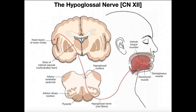When we think about the hypoglossal nerve, we have to consider that it has an upper motor neuron and a lower motor neuron component. The upper motor neuron comes from the precentral gyrus in the cerebral cortex, and we can follow its axon going down as part of the corticobulbar tracts. As it descends, it crosses over to the contralateral side at the pyramid level of the medulla oblongata, where you can see the hypoglossal nucleus and the cell body of the lower motor neuron.